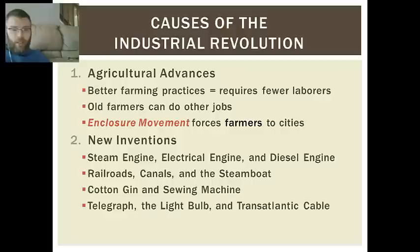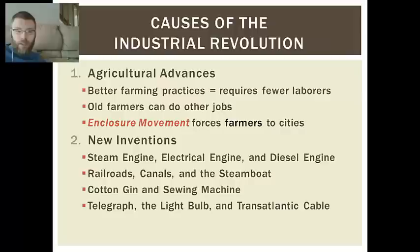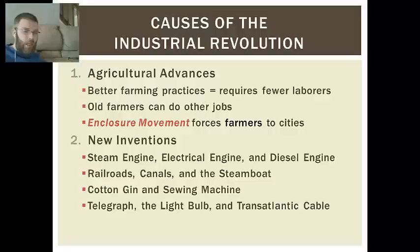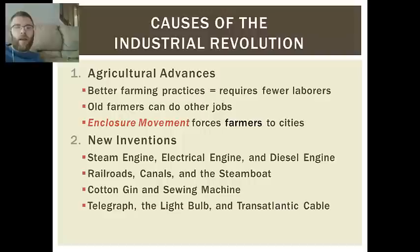There are also a bunch of new inventions, primarily the steam engine. This is the catalyst — the start of it all — which would evolve into the electrical engine and then the diesel engine. Steam engines ran on coal and used water power to propel things forward. Rail cars would use the steam engine. There were canals, steamboats, cotton gins and sewing machines. Eventually high-tech pieces like the telegraph, the light bulb, the transatlantic cable — where we could send messages from Great Britain to the new world in the blink of an eye. These are all really big things that caused the Industrial Revolution to take off.